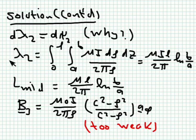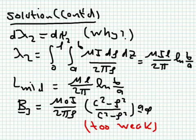The total flux linkage in the middle region is (μIL/2π)ln(B/A), and the inductance of the middle part of the coaxial cable is this flux linkage divided by the current I, giving L_middle = μL/(2π) × ln(B/A).